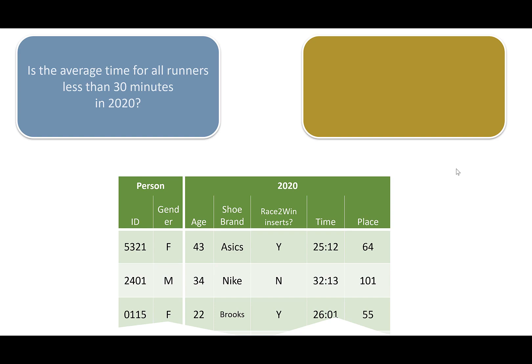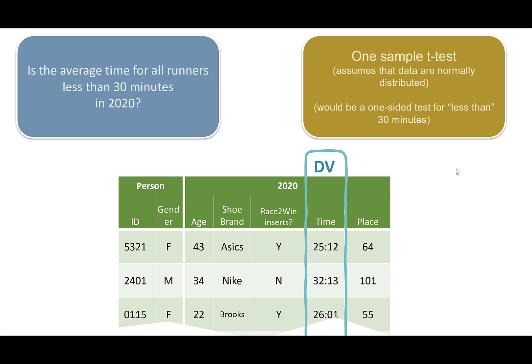What if we ask: is the average time for all runners less than 30 minutes in 2020? Now we just have a dependent variable — time — and no independent variable. We're not splitting data into groups; we're just asking if the average is less than 30 minutes. This calls for a one-sample t-test, assuming time is normally distributed. Because the question specifies 'less than 30 minutes,' this would actually be a one-sided, one-tailed test. Our dependent variable is a ratio variable with the interval property — that's why we can run t-tests and ANOVA.